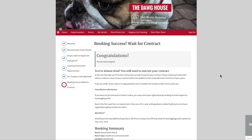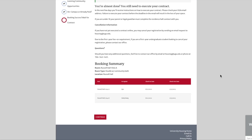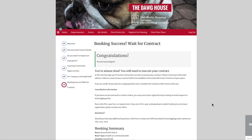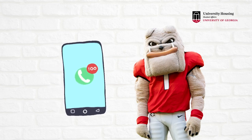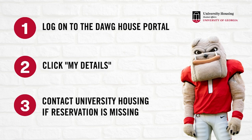At this point, we have both been assigned to beds in the same room in Russell Hall and can no longer search for rooms. Once we see the Booking Success — Wait for Contract page, click Continue. We should now let Harry Dog know we have reserved a space for him. Harry should log on to the Doghouse and click My Details to view the reservation. If Harry does not see the reservation after consulting with Q, he should contact University Housing immediately. If Q did not assign Harry to a space, Harry would need to wait for his own appointment time and choose for himself.